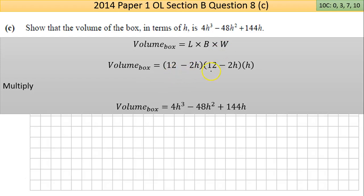So the length is 12 minus 2h, the breadth is 12 minus 2h, and the height is h. It's a triple multiplication, I suggest doing these two brackets first. You're going to end up with, let's do it for practice, 144. 12 minus 2h is minus 24h, doing that second multiplication.